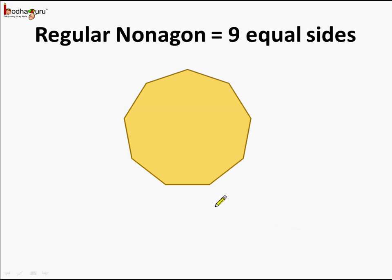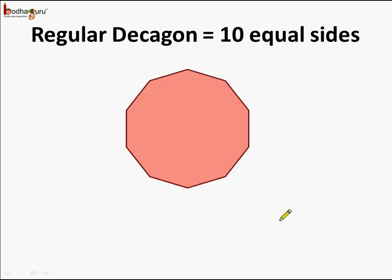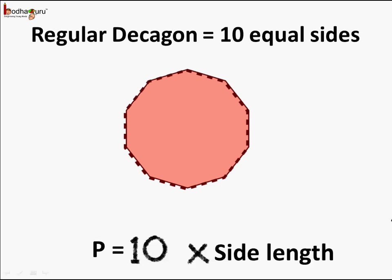A polygon with 9 sides is called a nonagon. And when all 9 sides are of equal length, we can say it is a regular nonagon. Its perimeter will be equal to 9 times the side length. Similarly, a figure with 10 sides where all 10 sides are of equal length is called a regular decagon, and its perimeter will be equal to 10 times the side length.